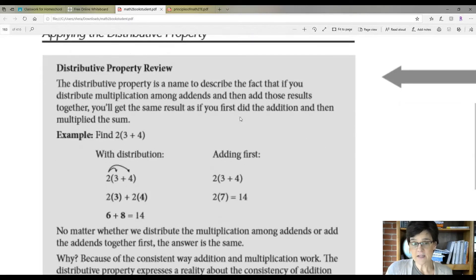Let's look at this property. The distributive property is a name to describe the fact that if you distribute multiplication among the addends and then add those results together, you'll get the same result as if you first did the addition and then multiply the sum. So here's a very simple example right here.